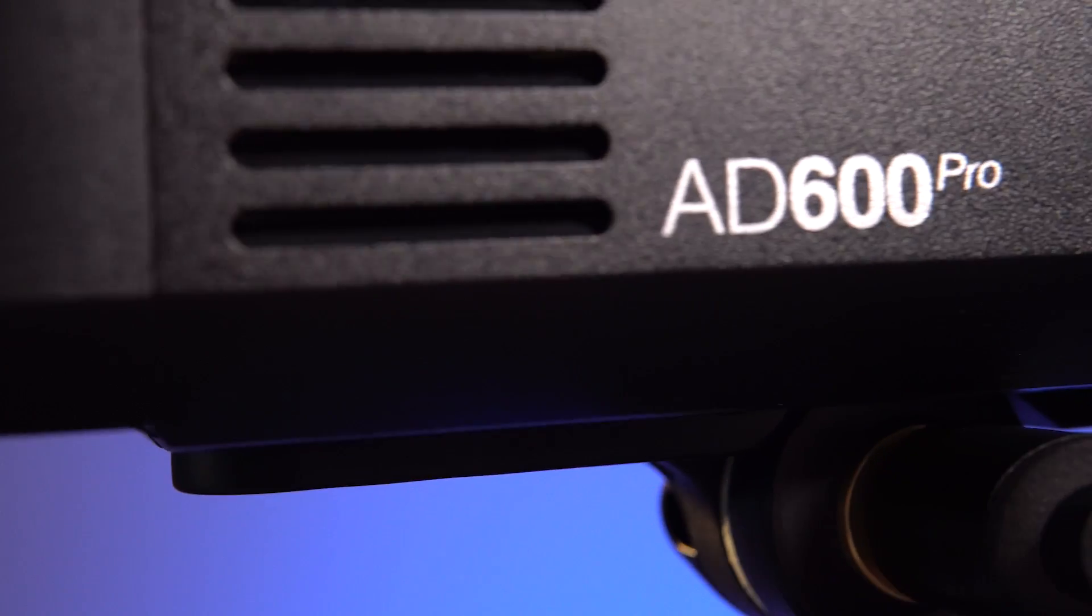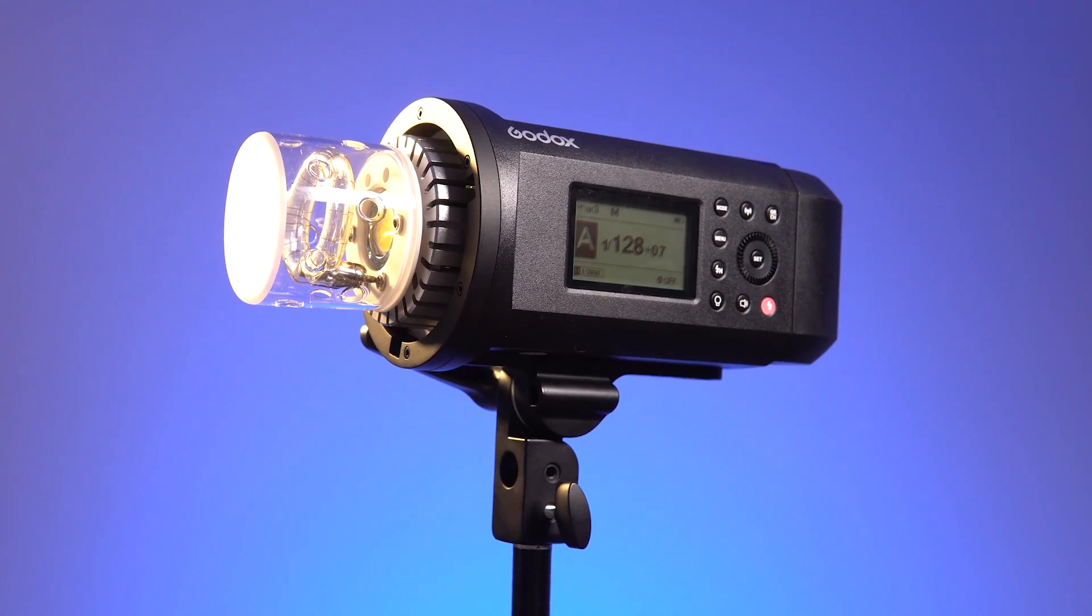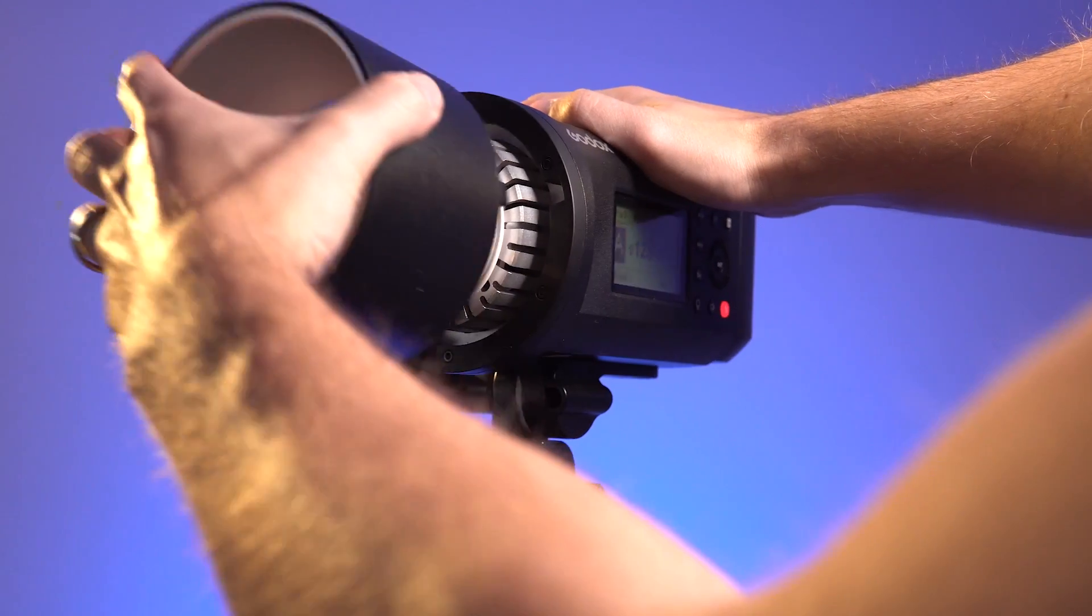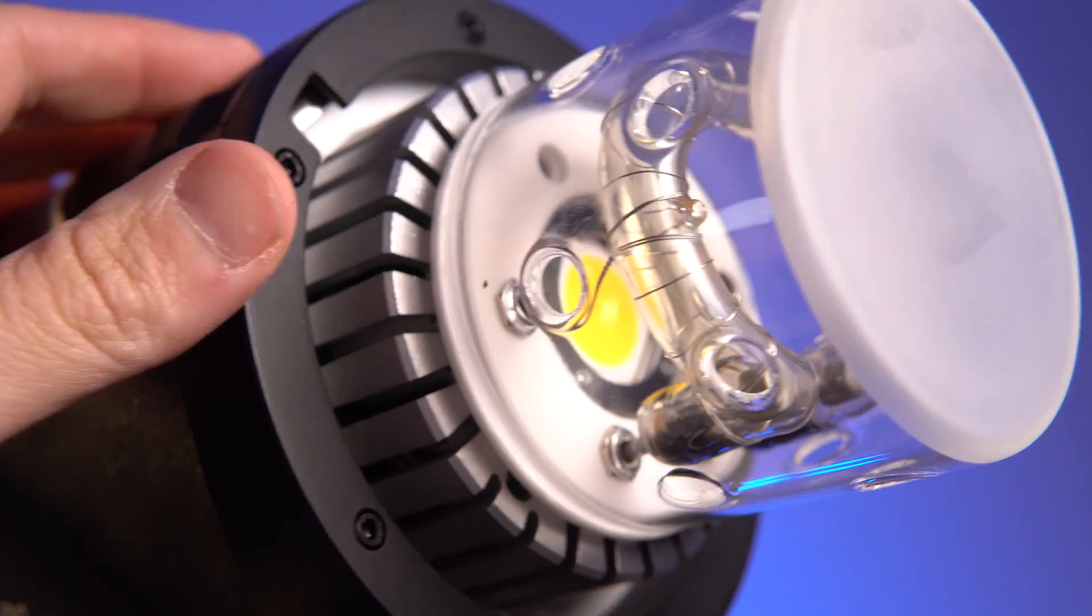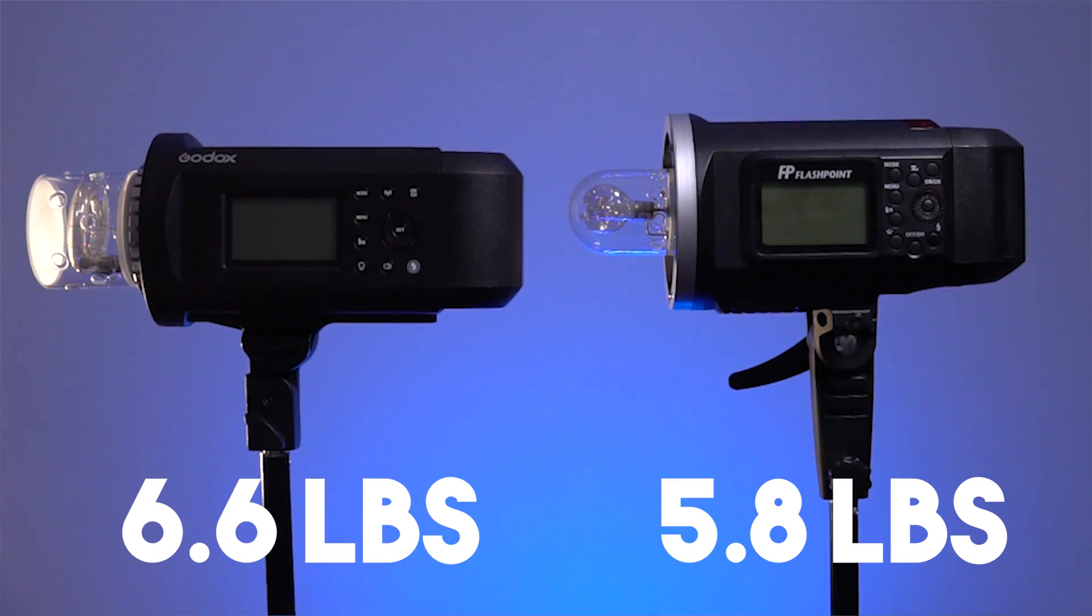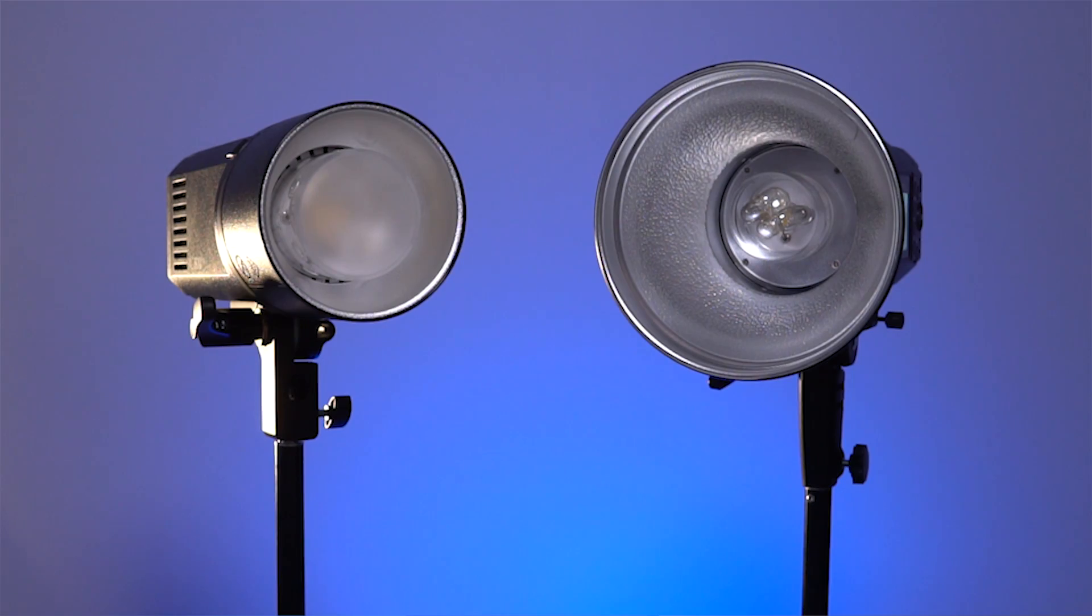The AD600 Pro is designed to be a slight step up from the original AD600, and there's a few ways that it's different. First off, the front sports an all-new head design and bulb while still keeping the Bowens modifier mount. The bulb is now the horseshoe shape with a frosted front element. The bulb comes out way further from the Bowens mount on the AD600 to ensure the entire bulb makes it into the modifier.